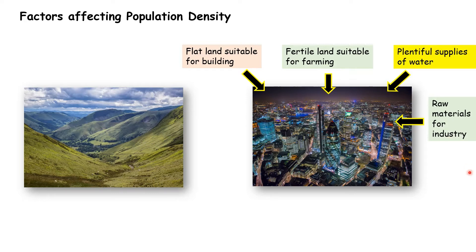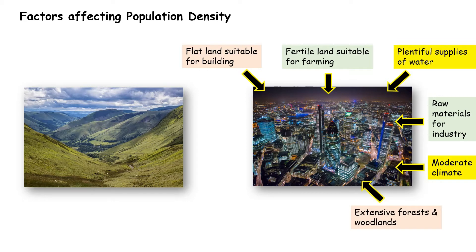Lots of raw materials for industry — things like rock and woodland — and good farming all contribute. A moderate climate means nothing too extreme. Extensive forests and woodlands provided a huge advantage for building materials, originally hunting wildlife, and making things for transport such as canoes and ships. Cities provide opportunities for work, and most of these areas grew hugely during the Industrial Revolution of the 1800s.